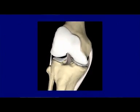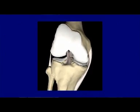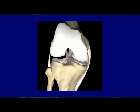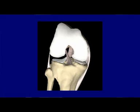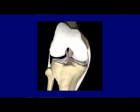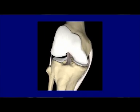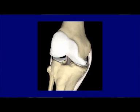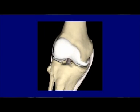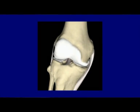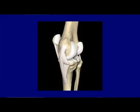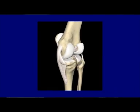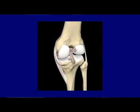You can see the posterior collateral ligament and the anterior collateral ligament — the posterior and anterior collateral ligaments. Here we see another one; you can see the collateral ligaments.